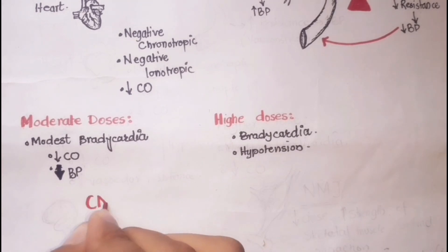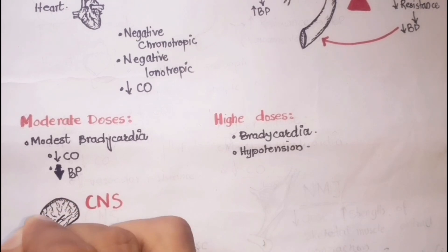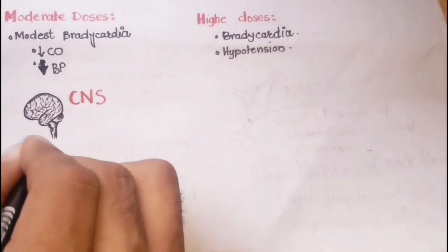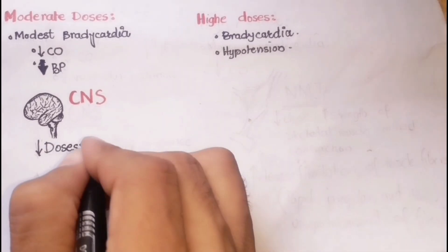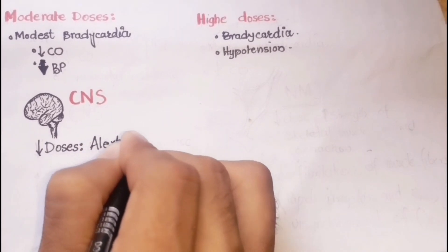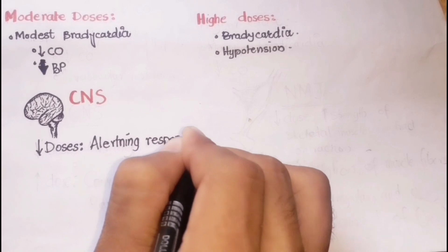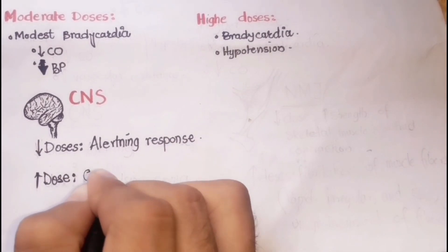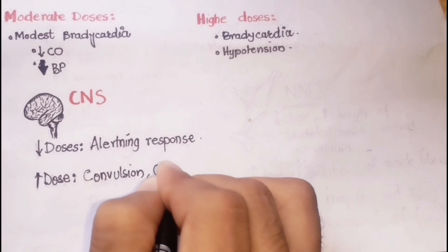The effects of indirect-acting drugs on the central nervous system are also different from that of direct-acting drugs, and these depend upon the doses of these drugs. For example, low doses of these drugs cause subjective alerting response.